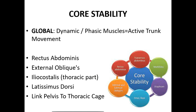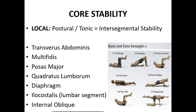Core stability global dynamic facing muscles are active trunk movement muscles: rectus abdominus, external oblique muscles, iliocostalis, and latissimus dorsi — linked from pelvis to thoracic cage. Local postural tonic muscles for intersegmental stability include: transverse abdominus, multifidus, psoas major, quadratus lumborum, diaphragm, iliocostalis lumbar segment, and internal oblique.